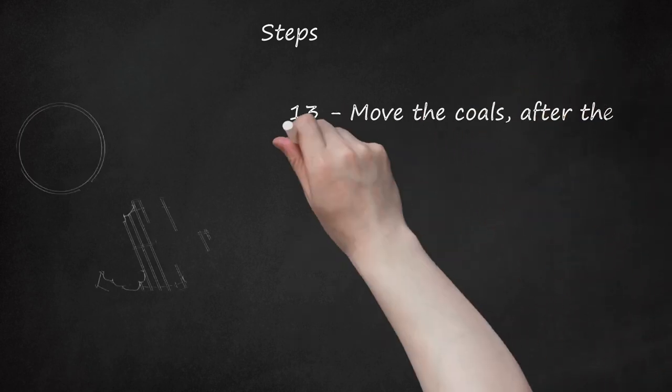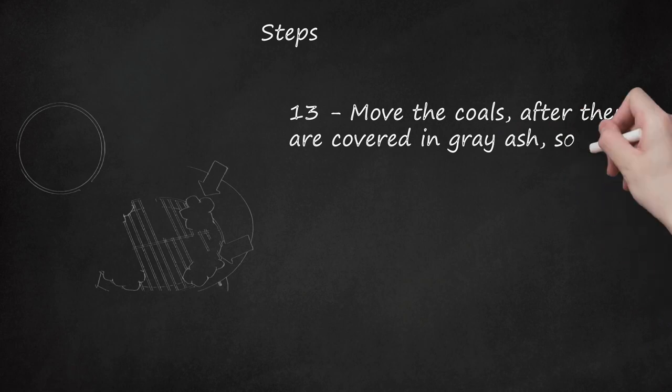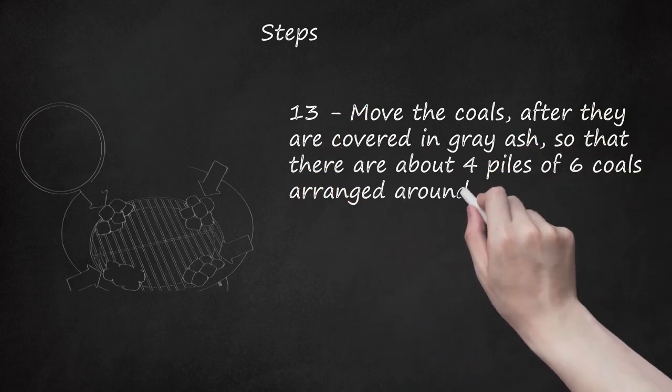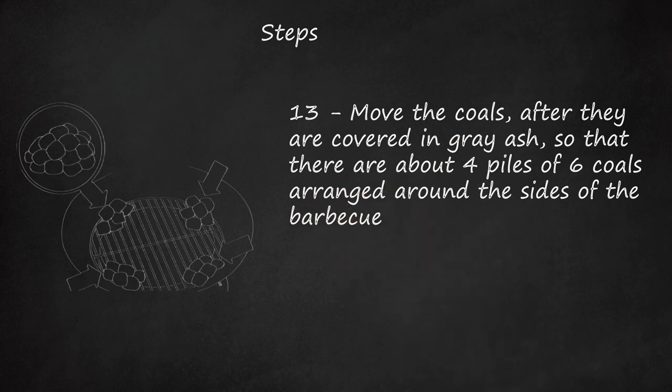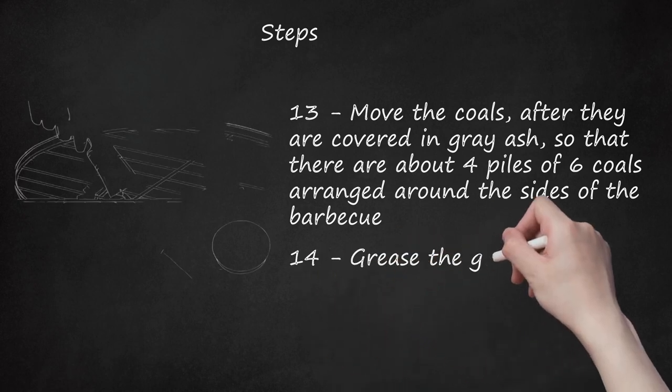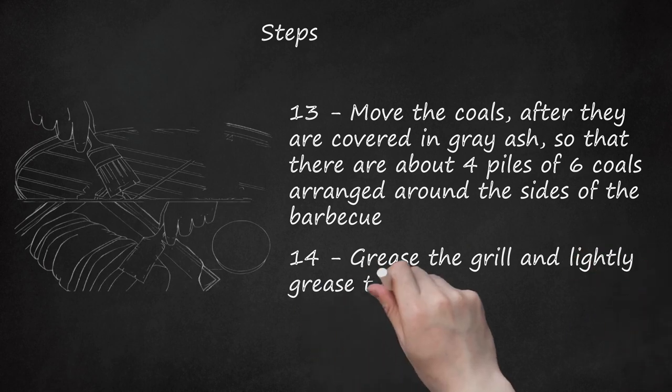Step 13: Move the coals, after they are covered in gray ash, so that there are about 4 piles of 6 coals arranged around the sides of the barbecue. If you're using a vented barbecue, make sure it is adjusted to maintain a low heat. Step 14: Grease the grill and lightly grease the skin side of the fillets.